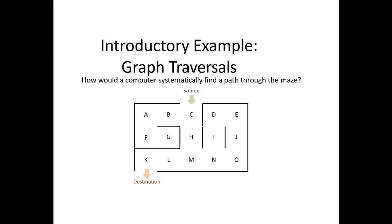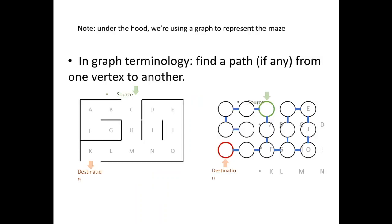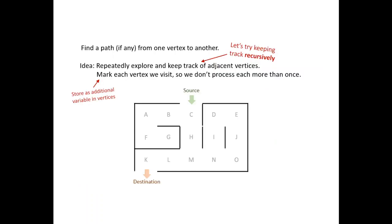We have graph traversals. We use depth and breadth-first searches. We have an introductory example of graph traversals. How it appears to systematically find a path through the maze. Here we have the source and destination. In graph terminology, we have to find the path from one vertex to another, whose source and destination is defined by the maze endpoints. The main idea is to repeatedly explore and keep track of the vertices. We have to mark each vertex we visit so we don't process them each more than once.